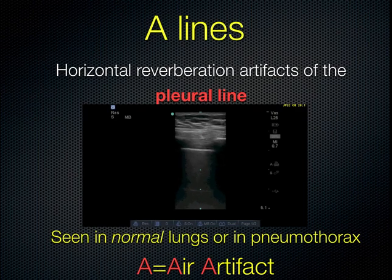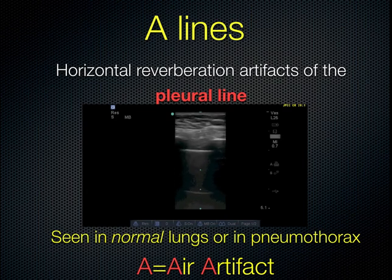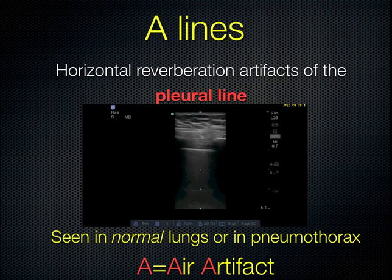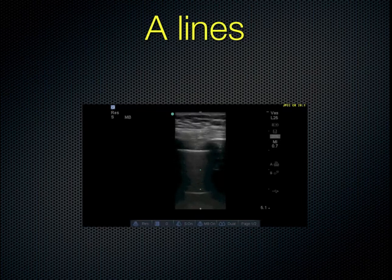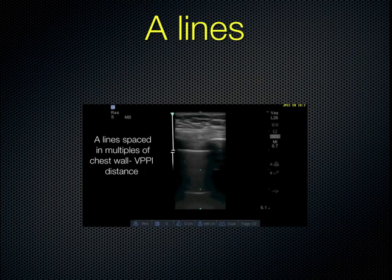With A lines, we are looking at a horizontal reverberation artifact that originates from the pleural line. The ultrasound waves encounter the pleural line, which is adjacent to air — these two adjacent areas with very different acoustical impedances set up an internal reverberation at that interface. Some waves come back to the probe as a reflection off the air in a delayed fashion, and the probe interprets that as a deeper structure. So we see A lines in both normal lungs and in pneumothorax. What we have are two rib shadows, the visceral-parietal pleural interface (VPPI), and an A line which is a reverberation of the VPPI.